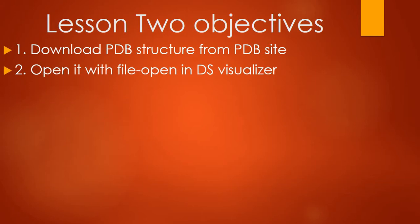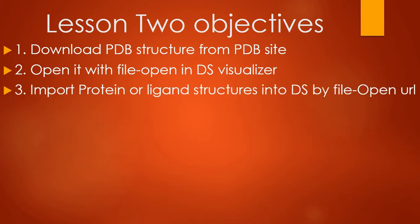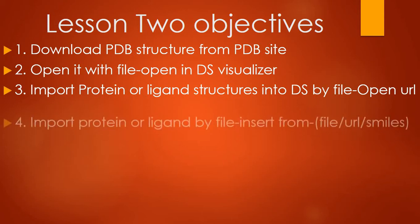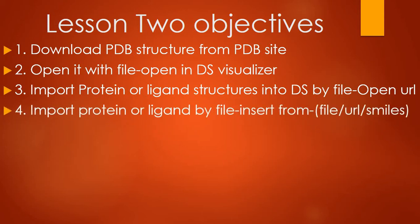Our second objective is to open the downloaded structure in DS Visualizer by going to File and then opening the structure. The third method is to import the protein structure, and we will also learn how to import ligand structures into DS Visualizer by going to the File menu and clicking on the Open URL button. Our fourth objective is importing the protein or ligand structure by going to File menu and clicking on the Insert From option.